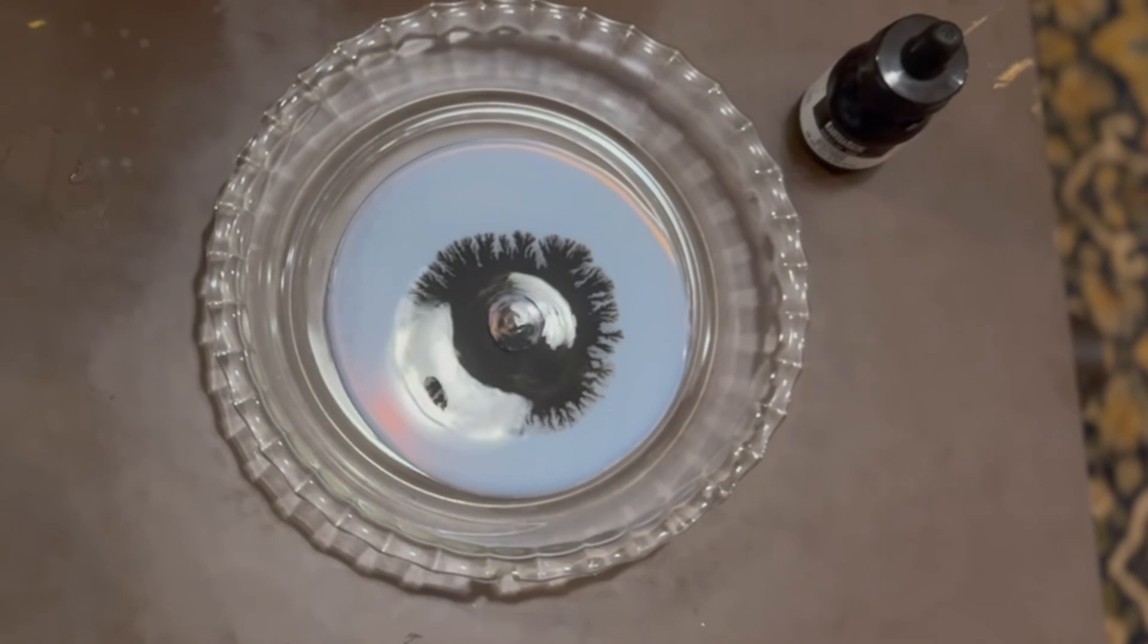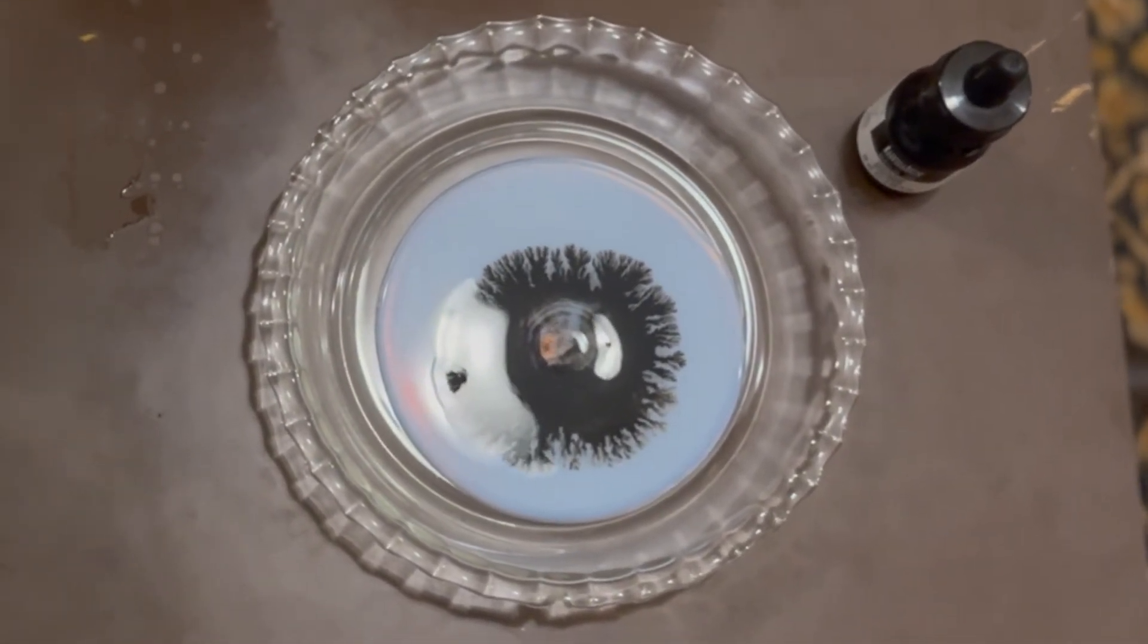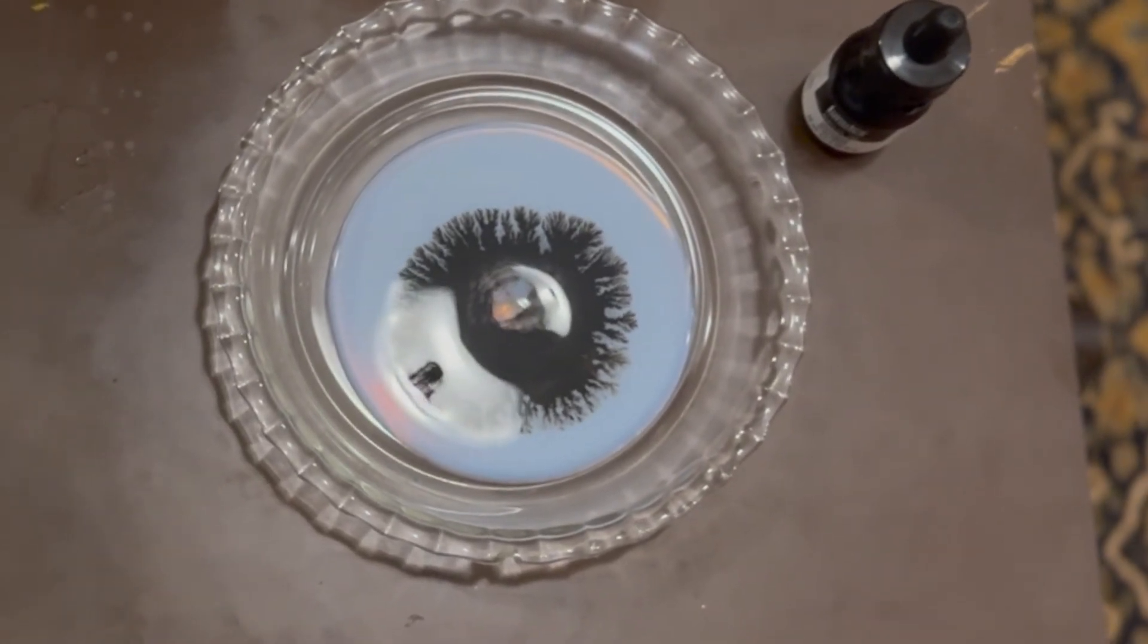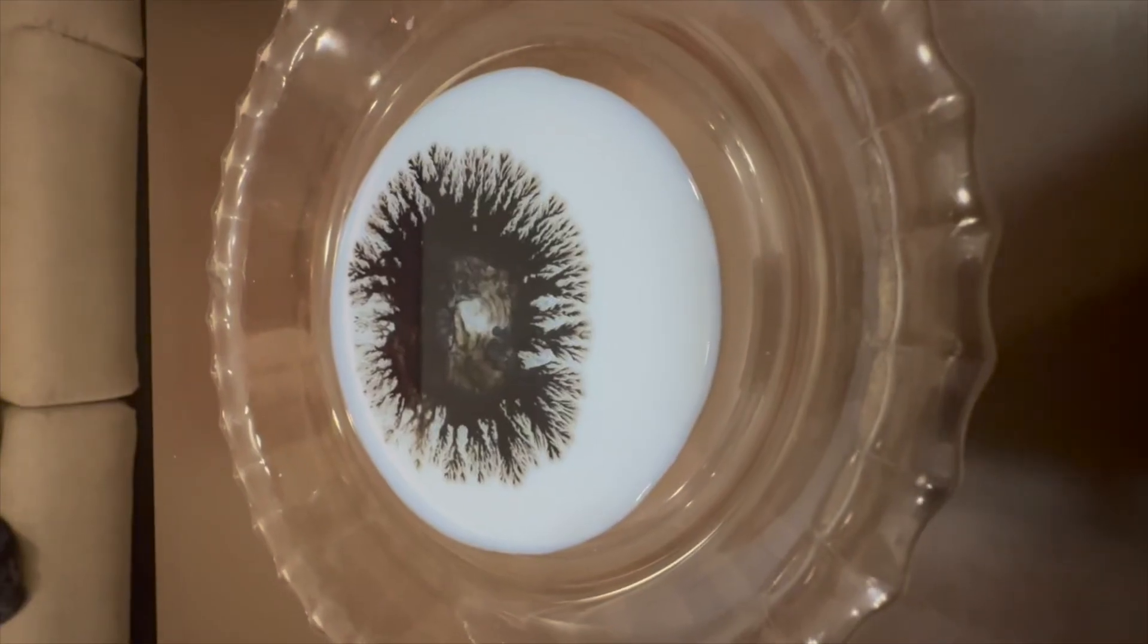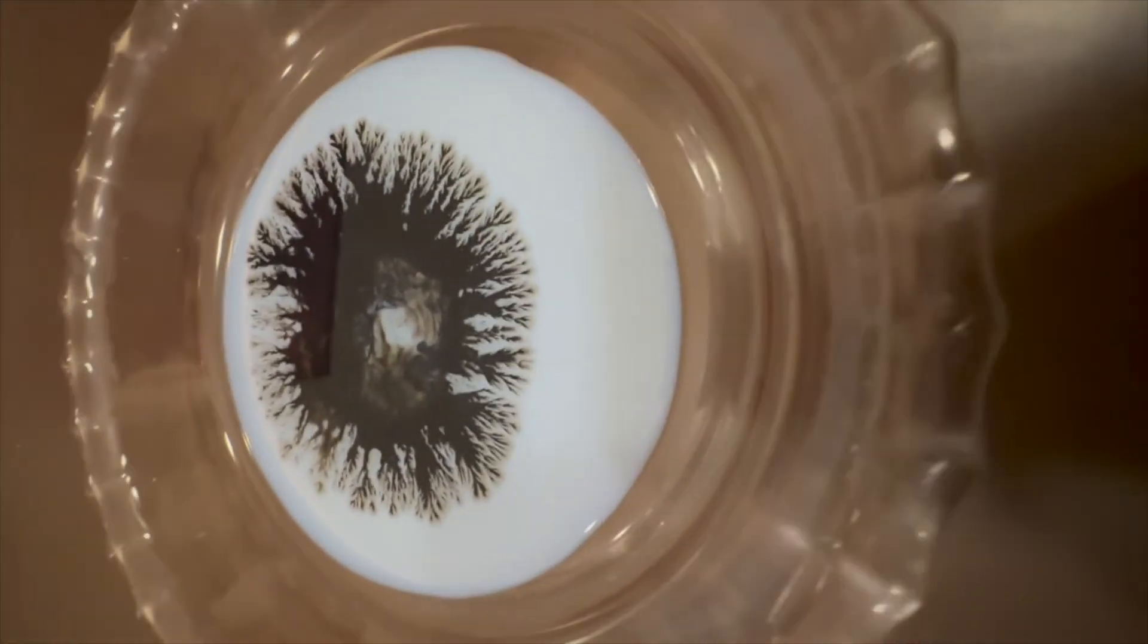You can vary the concentration of the alcohol or even mix the ink and alcohol beforehand to produce different variations in the fractal. Here is an example of the dendrite fractal which we have formed.